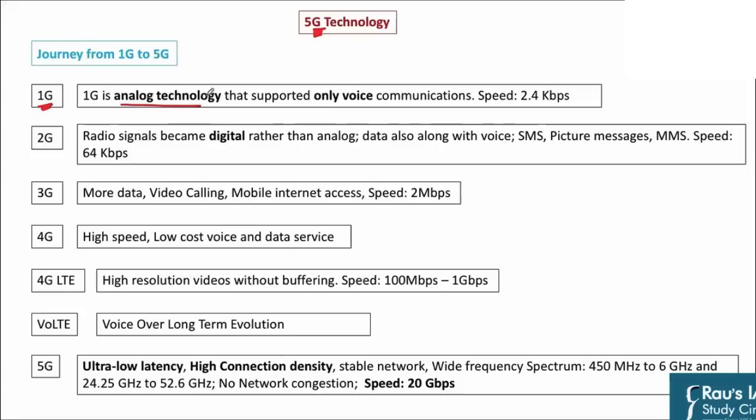1G was the beginning of telecommunication and it was an analog technology — those old phones with a rotary dial. That was the first way of beginning to telecommunicate. It supported only voice, and the speed was only 2.4 kbps. But still, for the first time, you could listen to the voice of a distant person — it was a technological breakthrough.